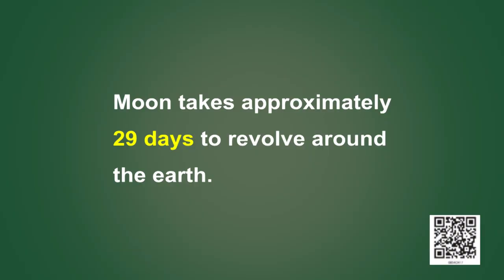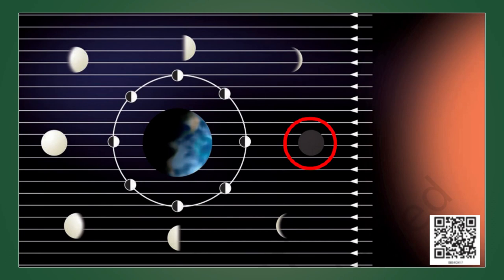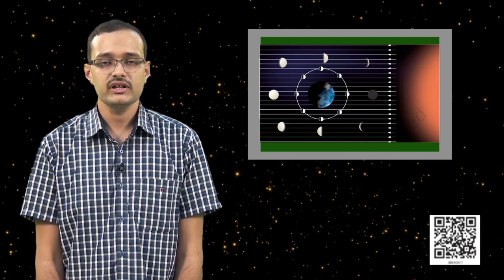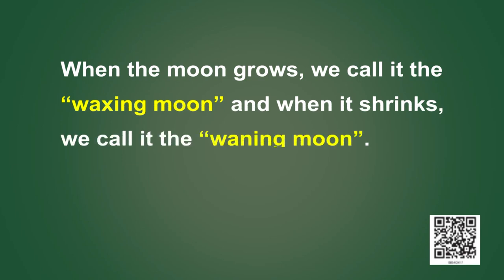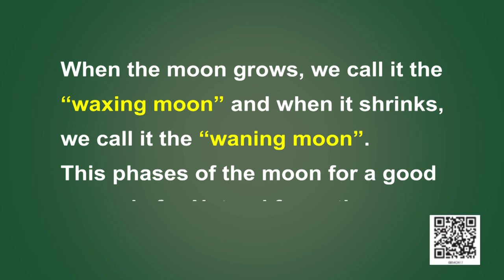We saw that the moon takes approximately 29 days to go around the earth. On the new moon night, the moon will be present between the earth and the sun. Hence, we will not be able to see the sunlit side of the moon. On the other hand, during the full moon, the moon will be present directly in front of us, which means the sunlit side faces us. And hence, we will be able to see the entire moon. Between the new moon and the full moon, the moon keeps on moving towards the east and we get to see the various faces of the moon. When the size of the moon grows, we call it the waxing moon. And when it shrinks, we call it the waning moon. These faces of the moon are a good example for natural formation.